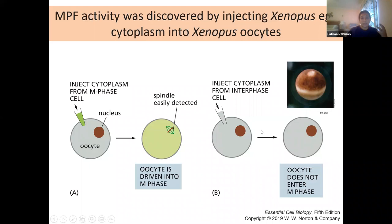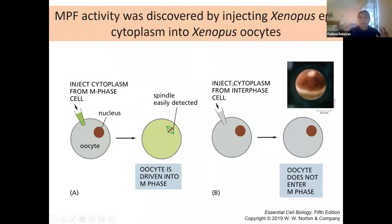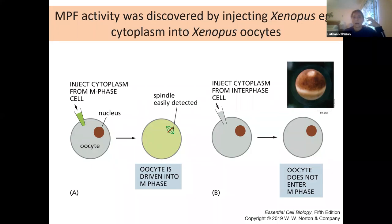Similarly, if they took cytoplasm from a cell in any other phase but mitosis — called interphase — the oocyte did not enter M phase and just remained the way it was. This told them that some factor in that cytoplasm was triggering cells into mitosis. Since DNA is in the nucleus, it would have to be a protein or group of proteins present in the cytoplasmic material.